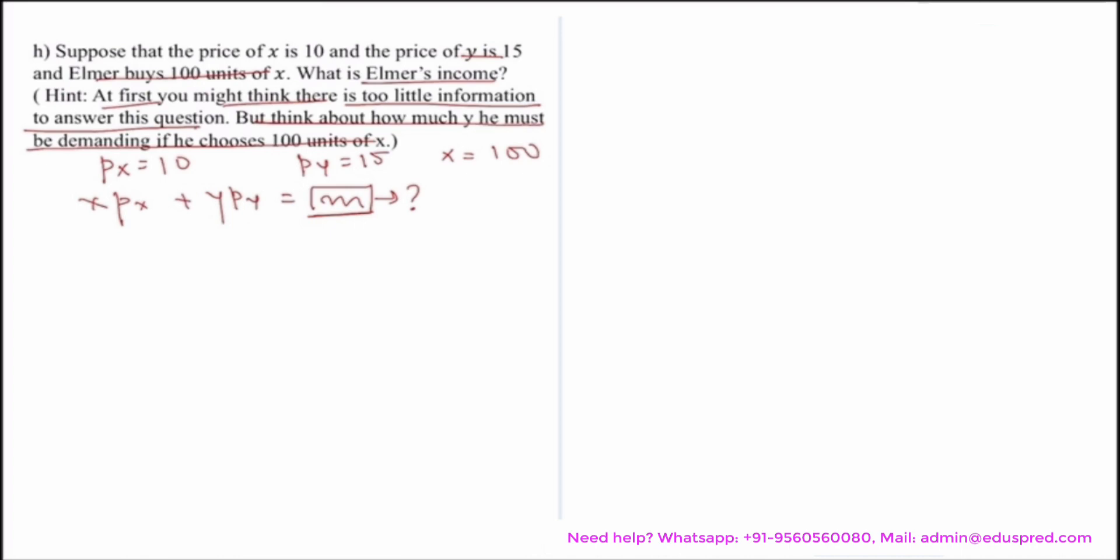Now let's substitute what information we have. We know x is 100, px is 10, plus y multiplied by 15 is equal to m. That is 1000 plus 15y is equal to m.